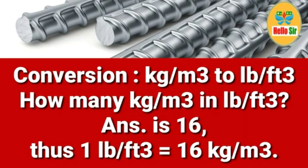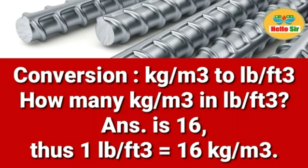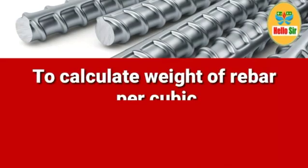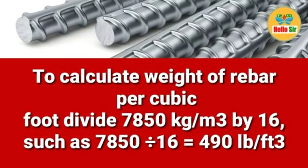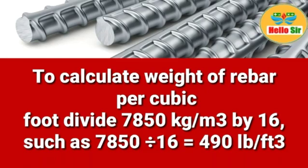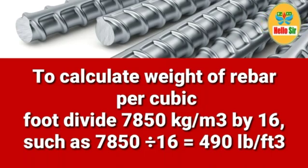To convert kg per meter cube to pounds per cubic foot: 1 pound per cubic foot is equal to 16 kg per meter cube. So to calculate the weight of rebar per cubic foot, divide by 16. That is: 7850 divided by 16, which gives 490 pounds per cubic foot.